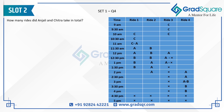Question 4: How many rides did Anjali and Chitra take in total? Anjali took all 4 rides, and Chitra took 2 rides — Ride 1 and Ride 3. So 4 plus 2 equals 6 total rides taken by Anjali and Chitra together.